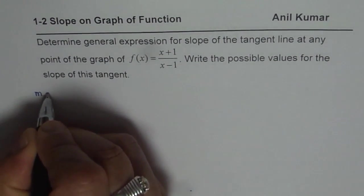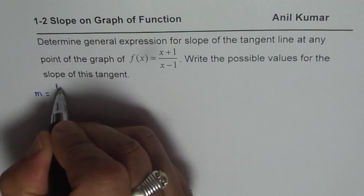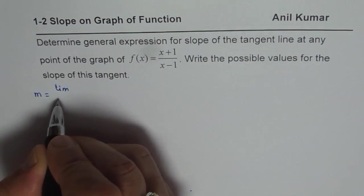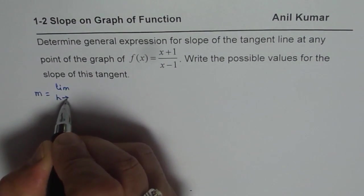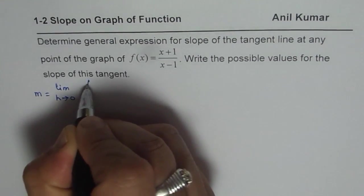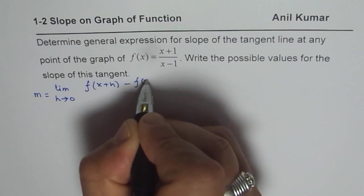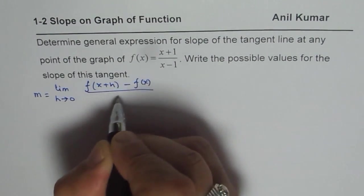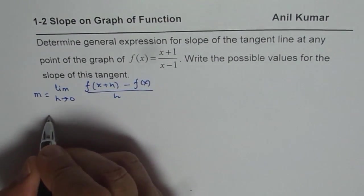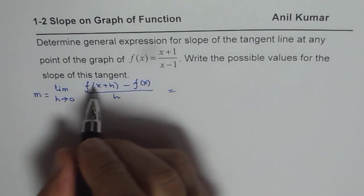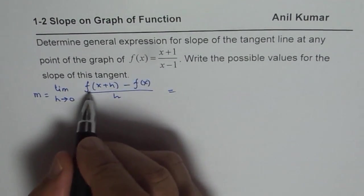To find slope, what we need to do is we need to find the limit as h approaches 0 for [f(x+h) - f(x)]/h. The two points we are considering are very close to one another. So, let's rewrite this expression with x+h.